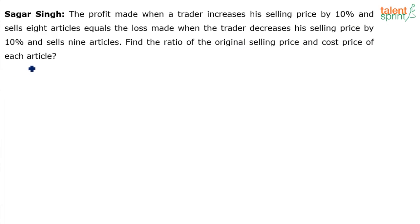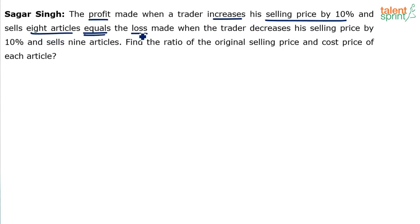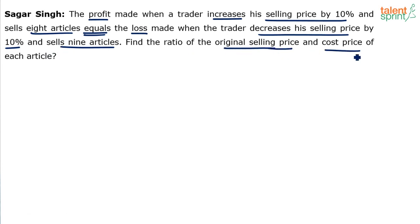So basically he is talking about two different situations here. In situation 1, the selling price has been increased by 10% and the trader makes a profit on 8 articles. That profit equals the loss when the trader decreases the selling price by 10% and sells 9 articles. So you have to find out the ratio of original selling price and cost price.